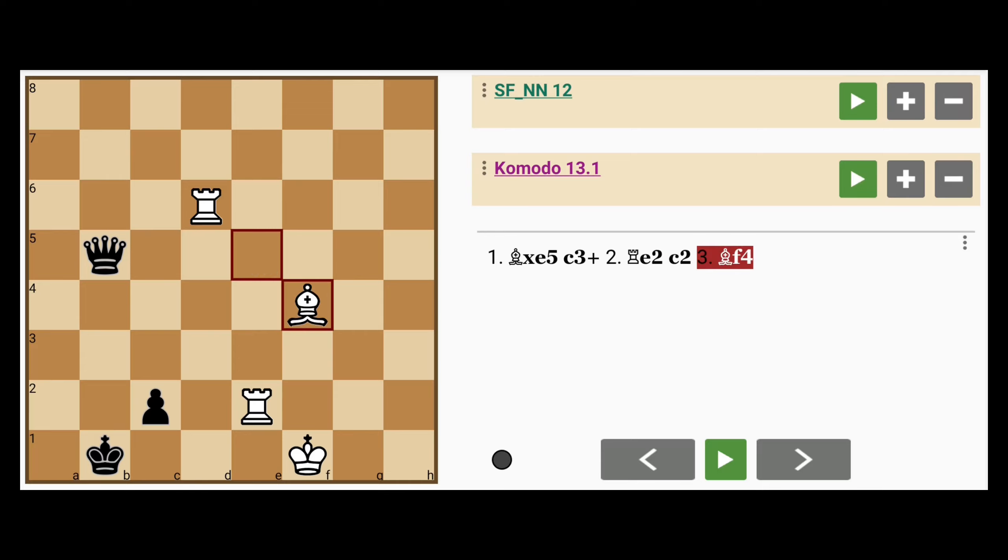Bishop to f4, guarding the pawn promotion square. Black promotes anyway to queen with check, white captures, the king captures, and we basically have a drawn position, queen versus two rooks.